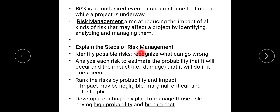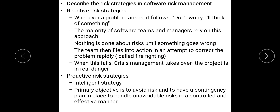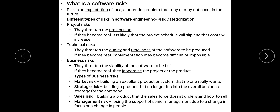We discussed the steps of Risk Management. Then we learnt about Risk Strategies — two types: reactive and proactive risk strategies. Then the definition of Software Risk, and the categories of risks or types of risks — mainly Project Risk, Technical Risks, and Business Risk, which has subdivisions such as Market Strategy,